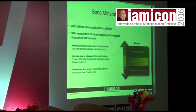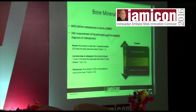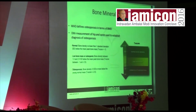What is bone mineral density? The WHO defines osteoporosis in terms of bone mineral density. DEXA measurement of hip and spine is used to establish the diagnosis. Normal bone mineral density: T-score greater than or equal to minus 1. Low bone mass or osteopenia: T-score between minus 1 and minus 2.5. Osteoporosis: T-score less than or equal to minus 2.5, going down to minus 4.